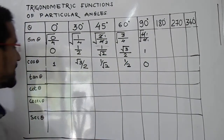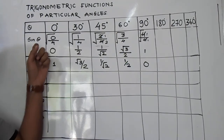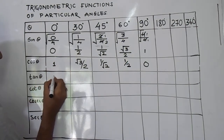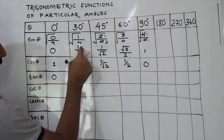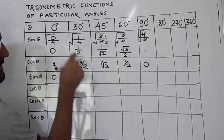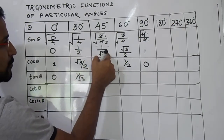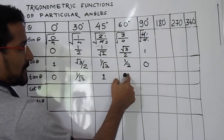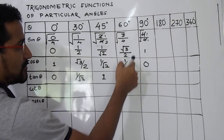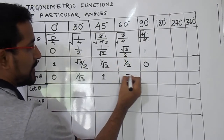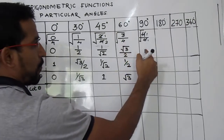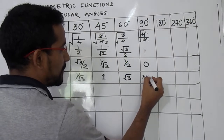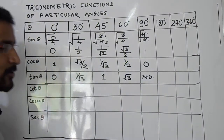Now for tan θ. As we have already studied, tan θ = sin θ / cos θ, so just divide these two values. 0/1 = 0. Then (1/2)/(√3/2) — the 2s cancel — giving 1/√3. Then (1/√2)/(1/√2) = 1, that is tan 45°. For tan 60°, the 2s cancel giving √3/1 = √3. Then 1/0 is not defined. So we have the tan values.